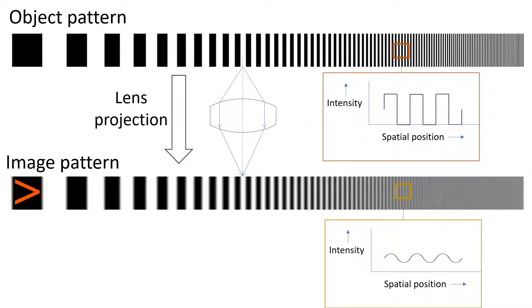If we look at the image pattern, we see that it is not a perfect copy of the object pattern. So at lower spatial frequencies, in the left of the pattern, the projections look pretty good. But when we go to higher frequencies or smaller line widths, we see that the square wave of the original intensity pattern has actually become sort of a sine wave function. And when we look at the pattern itself, we notice diminished sharpness and contrast.